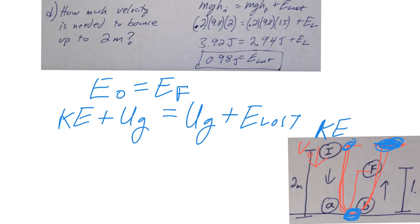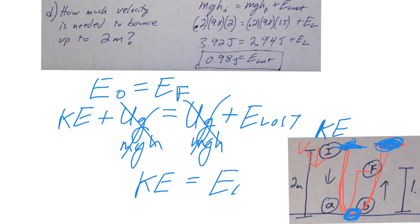Okay, so one thing to notice right away is this height H, like when you do MGH and MGH, those two heights are the same, and so basically this is going to cancel out. So notice what we're left with is a nice little thing that the amount of kinetic energy we need to add is exactly equal to the energy that we lost.